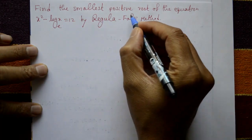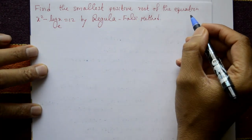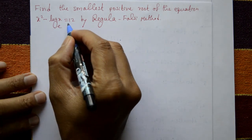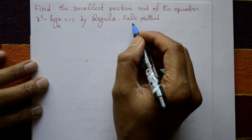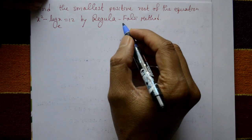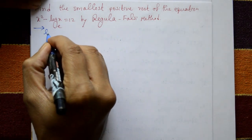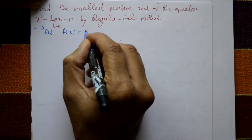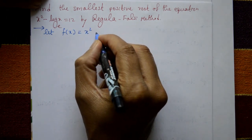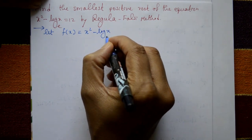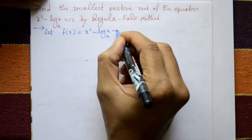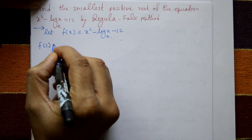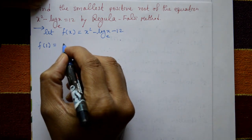Find the smallest positive root of the equation x squared minus log x to the base e equal to 12 by the Regula Falsi method. Solution: let f(x) = x squared minus log x to the base e minus 12. Now put x equal to 1, you get a negative value.